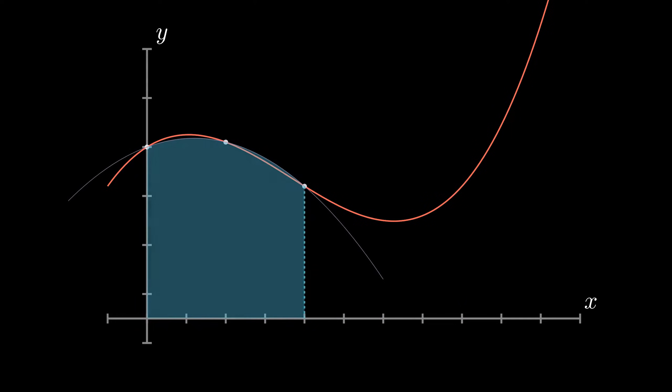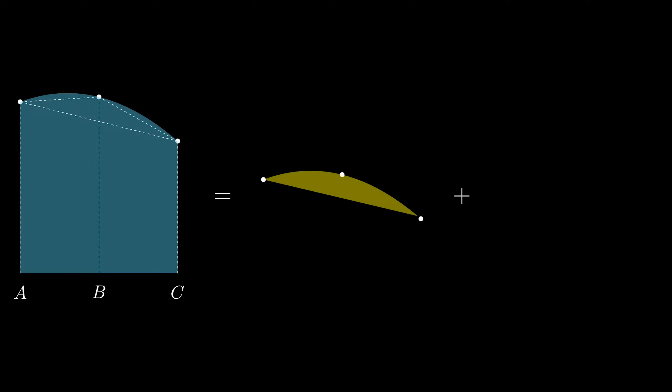Now, how do we find the area under this one chunk? We can see that is the sum of the parabolic segment and the trapezoid.